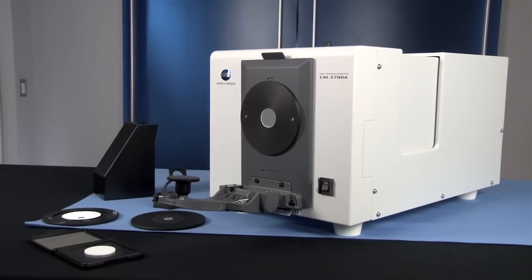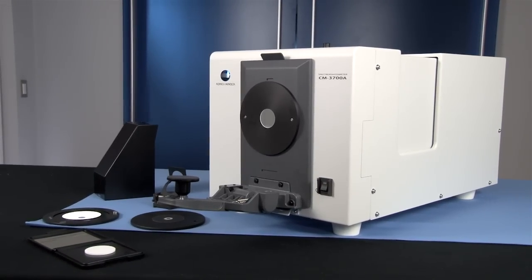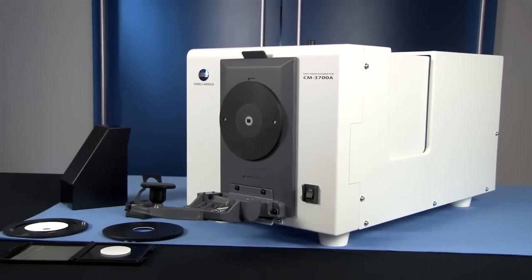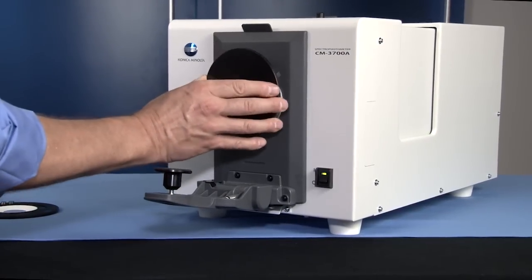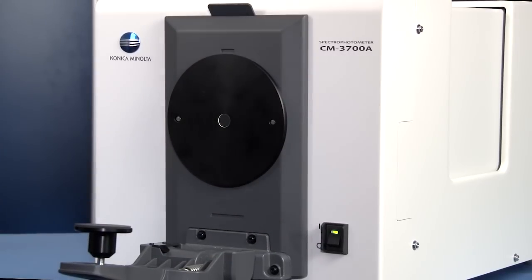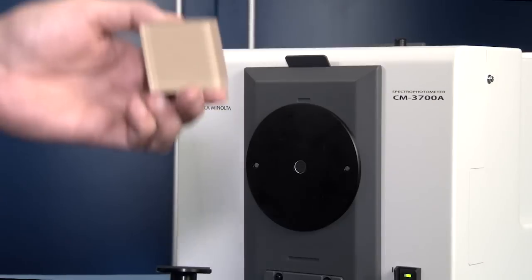Three aperture size options are available to meet the user's sample and application needs. Once selected, the CM3700A automatically detects the aperture size and communicates this to SpectraMagic NX for improved user convenience.